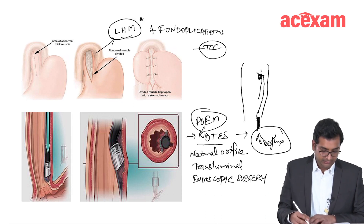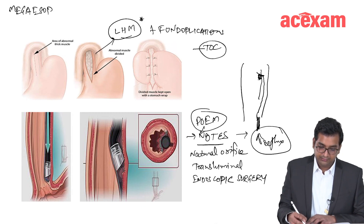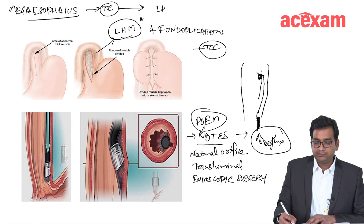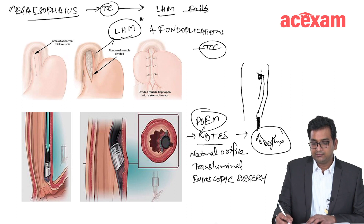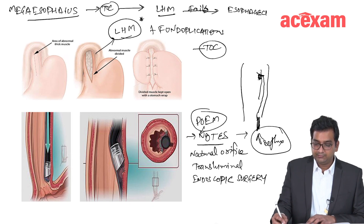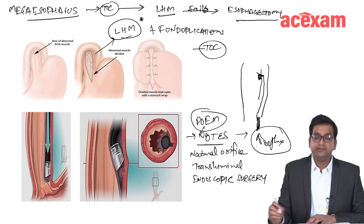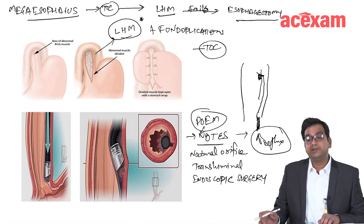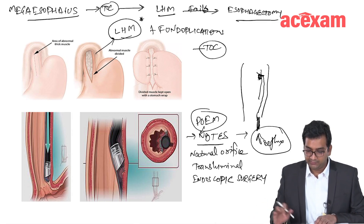In megaesophagus or sigmoid esophagus, the treatment of choice is laparoscopic Heller's myotomy. If it fails, then we go for esophagectomy. We do not go for esophagectomy directly — we first do Heller's myotomy, and only if it fails do we proceed to esophagectomy.